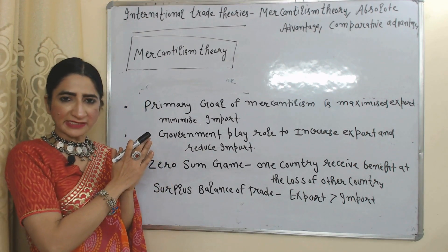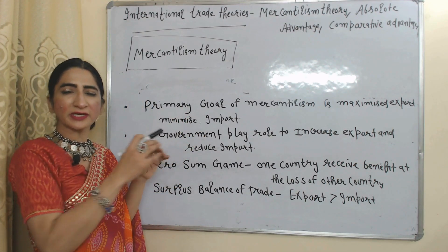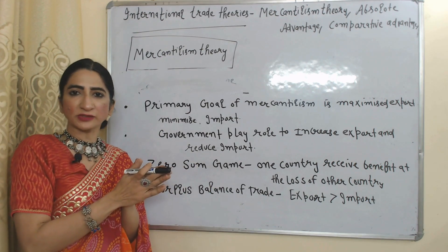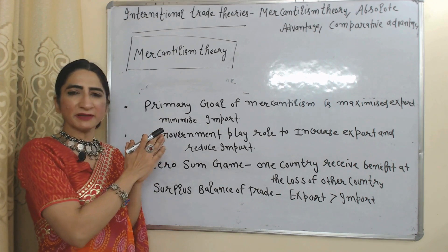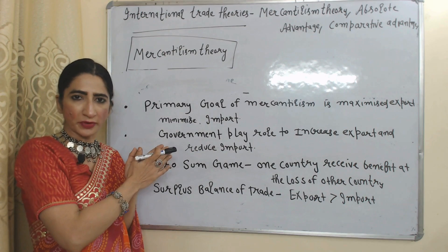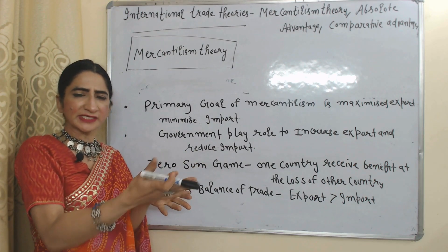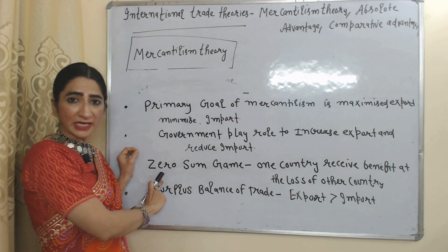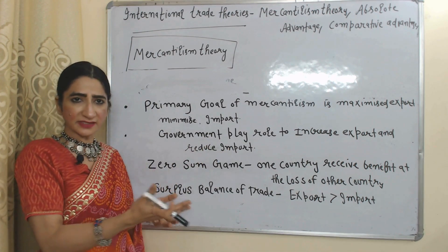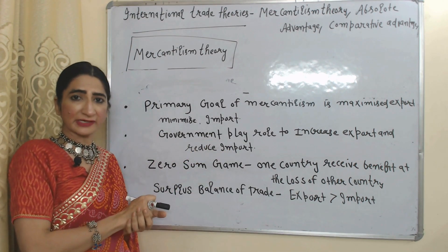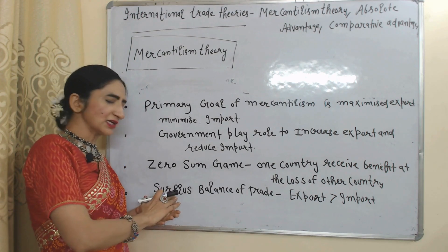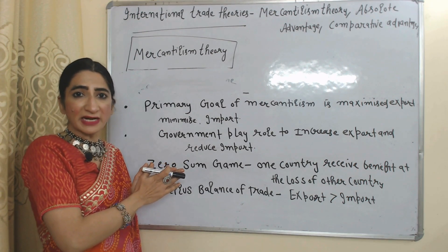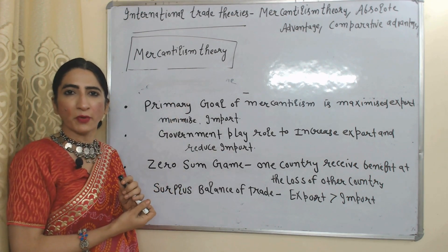The primary goal of mercantilism is to maximize export and minimize import, because through export we can increase the wealth of the nation. Government plays an important role to increase export and reduce import by giving export subsidies and imposing tariffs. This theory believes in zero-sum game, meaning one country can receive benefit at the loss of another country. According to this theory, we should always try for a surplus balance of trade, meaning export should be more than import.